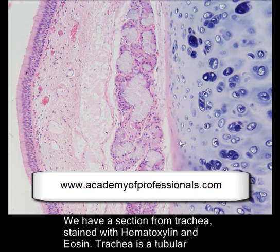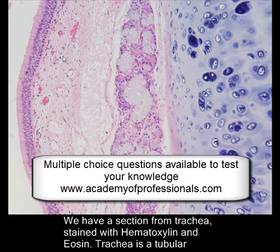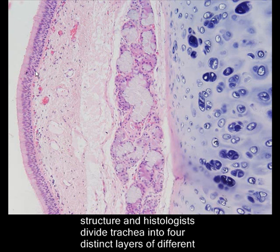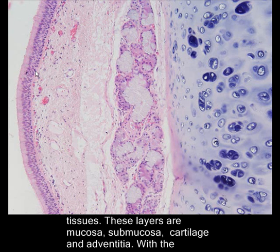We have a section of trachea stained with hematoxylin and eosin. Trachea, as we know, is a tubular structure, and histologists divide trachea into four distinct layers of different tissues. These layers are mucosa, submucosa, cartilage, and adventitia.